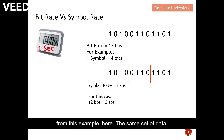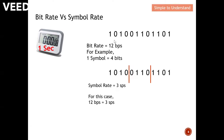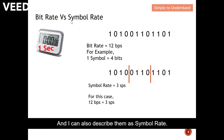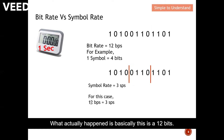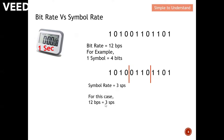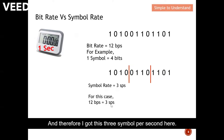This example illustrates that 12 bits per second equals three symbols per second. The same set of data can be described as a bit rate or as a symbol rate. The key difference comes from how many bits make up one symbol — in this case, 12 divided by 4 gives three symbols per second.